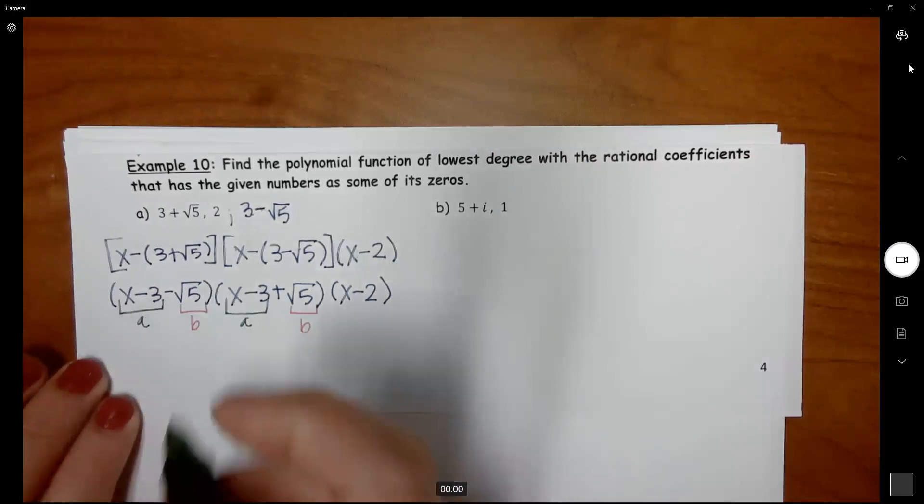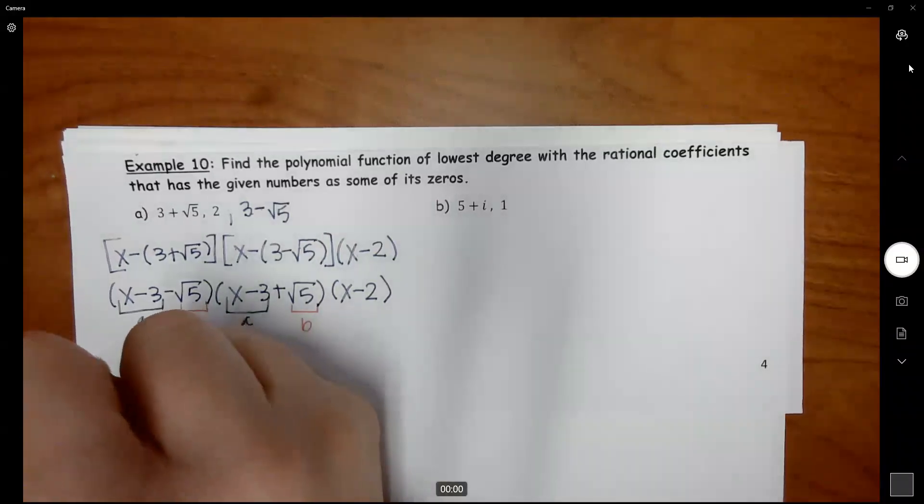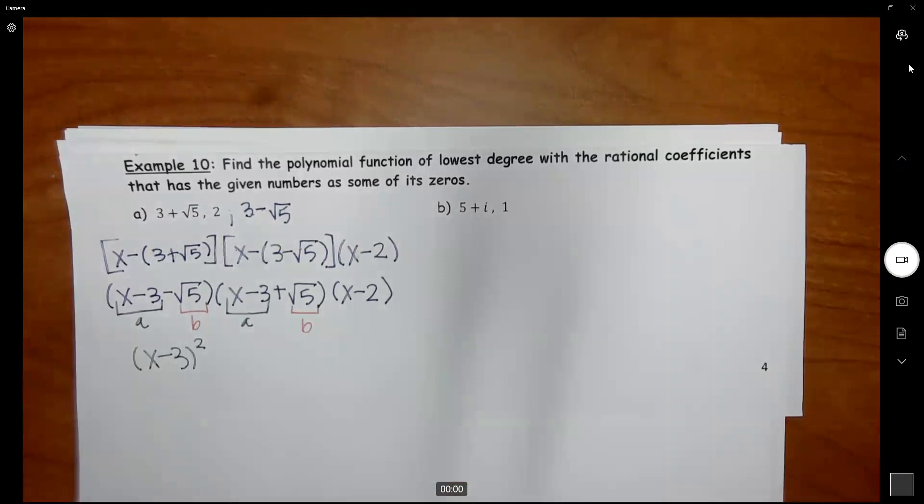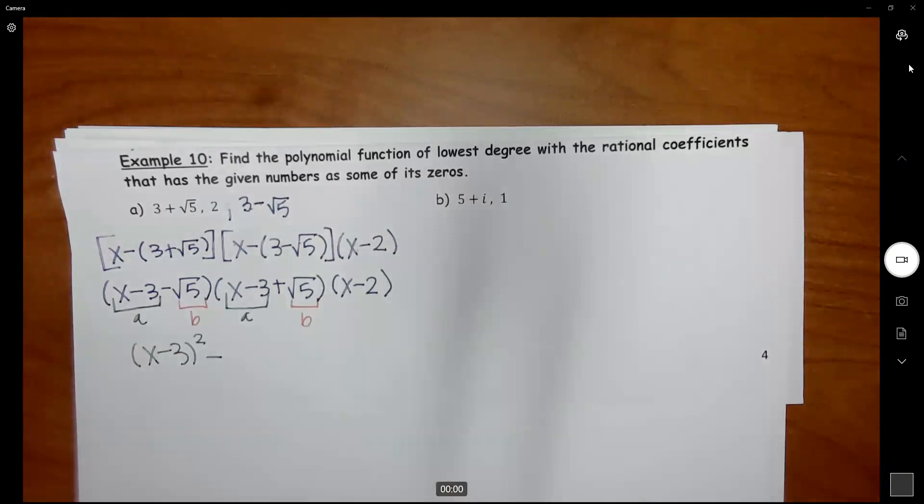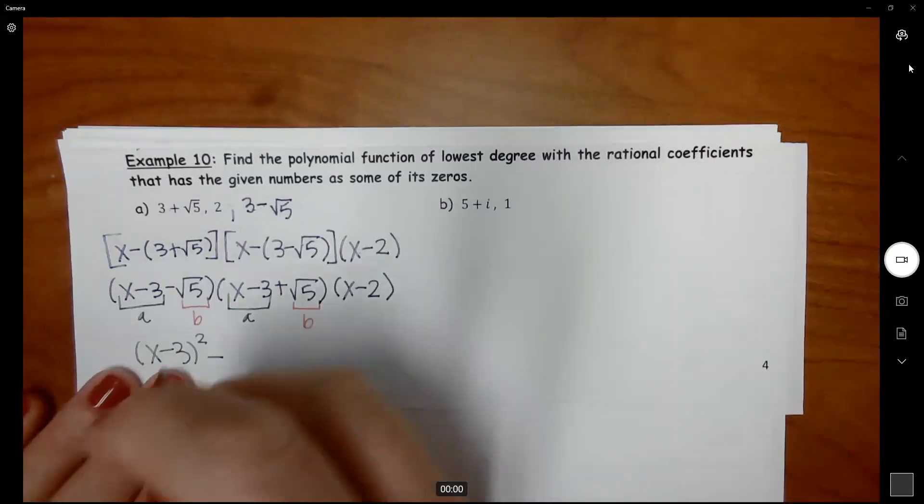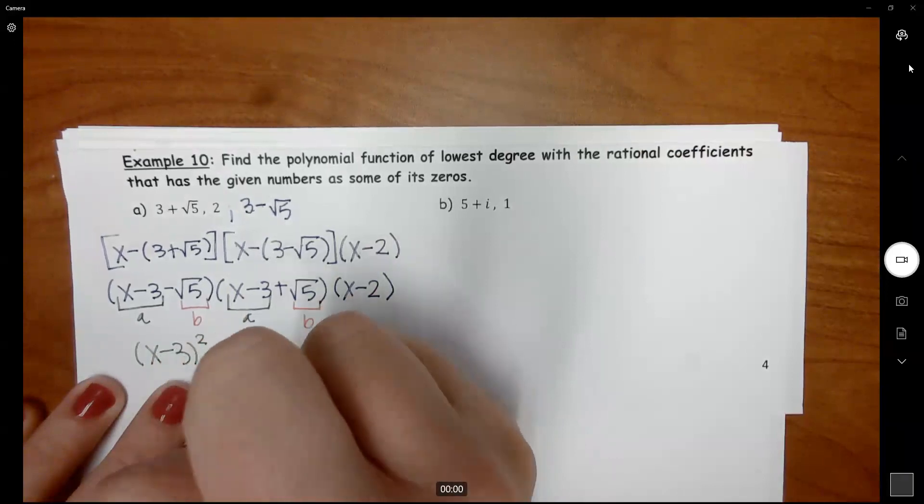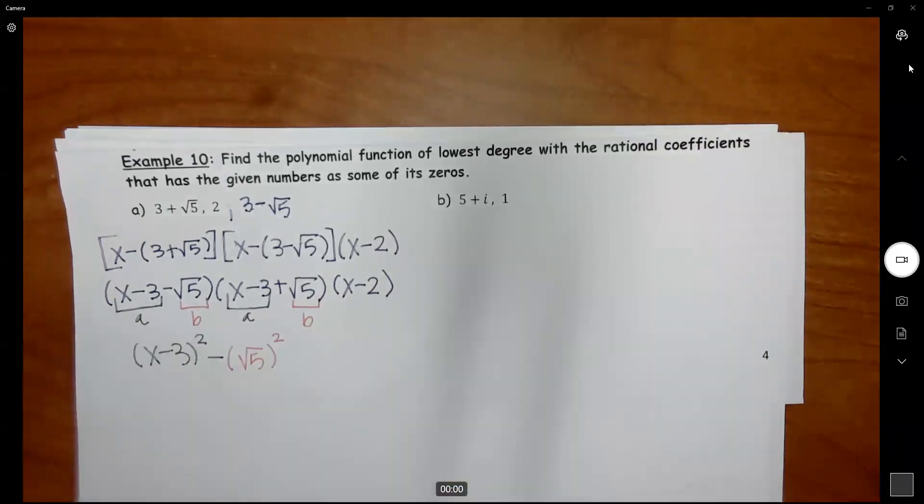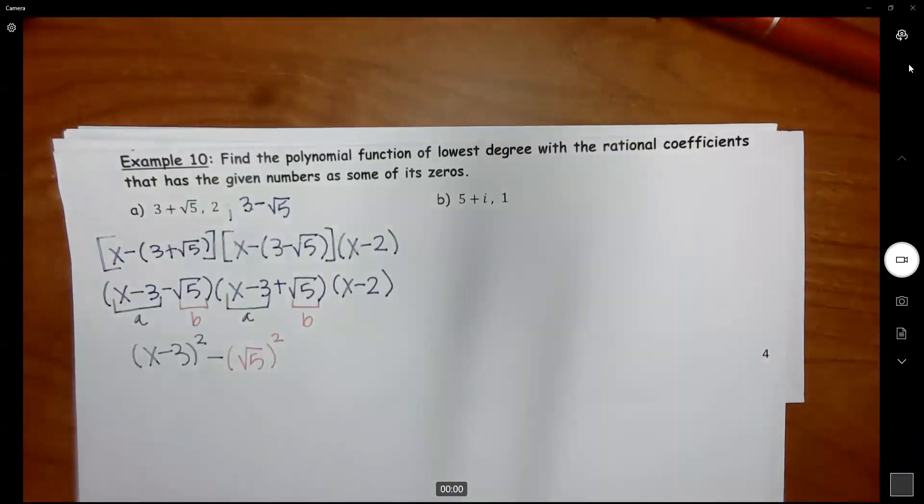So I've got X minus 3 here and X minus 3 here. So that means I have two of them, X minus 3 squared, minus square root of 5 squared. Because again, I've got two of them.